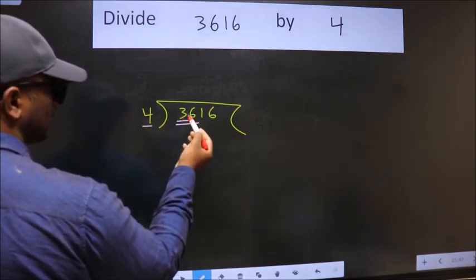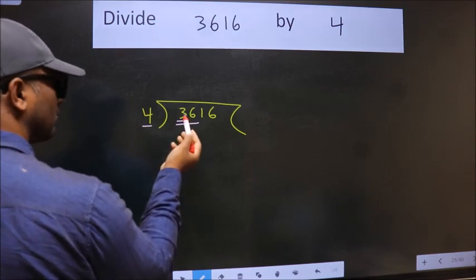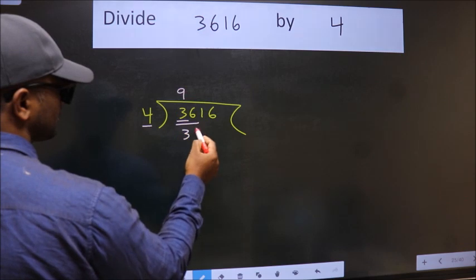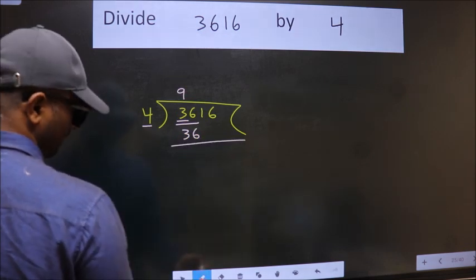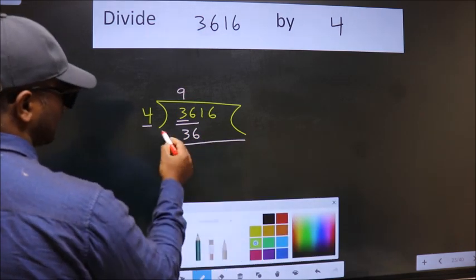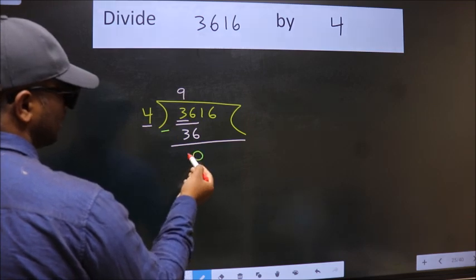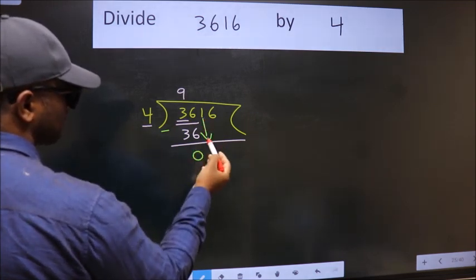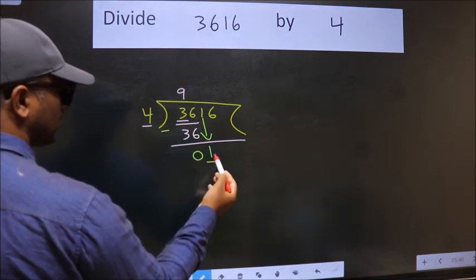So we should take two numbers: 36. When do we get 36 in the four table? Four nines, 36. Now we should subtract—we get zero. After this, bring down the next number.